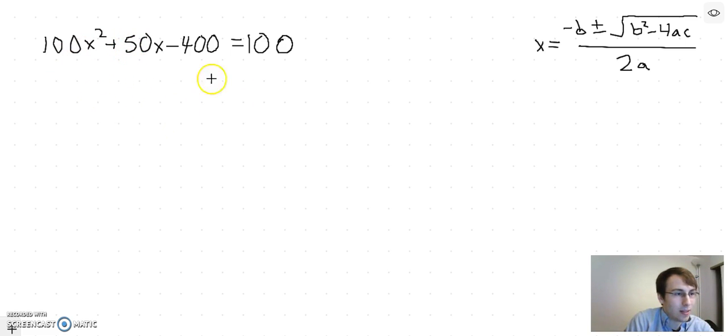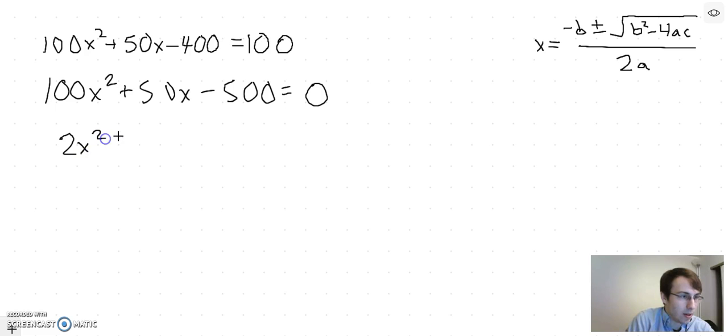Let's divide everything by 50 because 50 is the biggest number that goes into everything. So 100 divided by 50 is 2, so 2x squared plus x minus 10 equals 0. That's a lot nicer to work with.